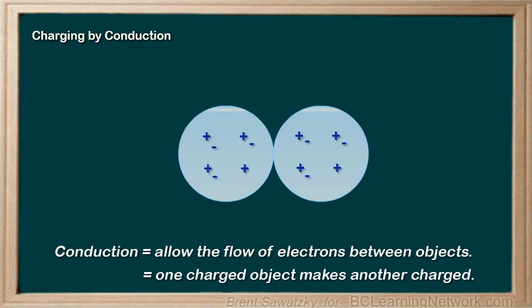In charging by conduction, the electrons are already ready to go due to the electrostatic forces. They don't require any rubbing. They just need a path to get from one item to the other. This path is the key to charging by conduction.